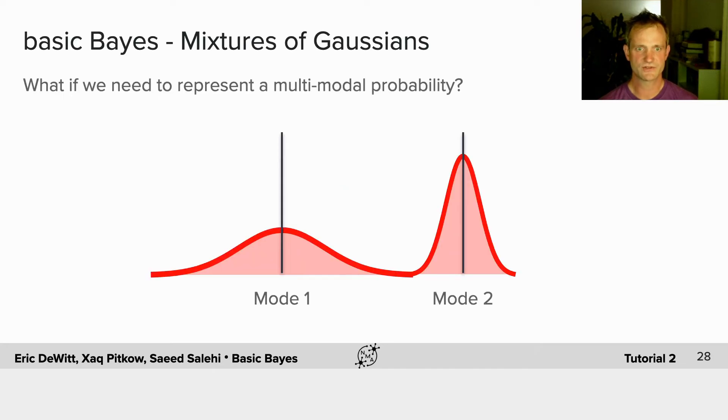Next we're going to look at mixtures of Gaussians. Why would we want to represent things with a mixture of Gaussians?